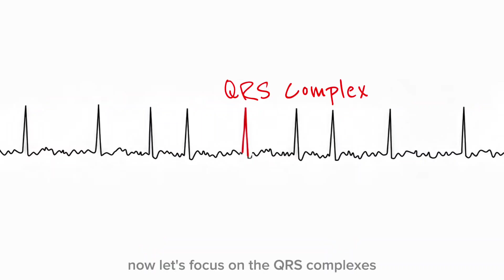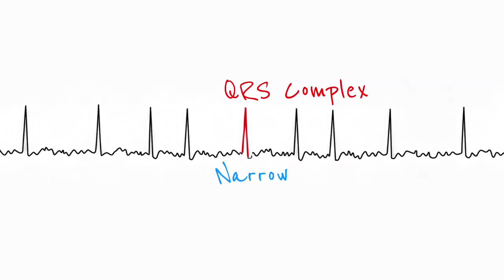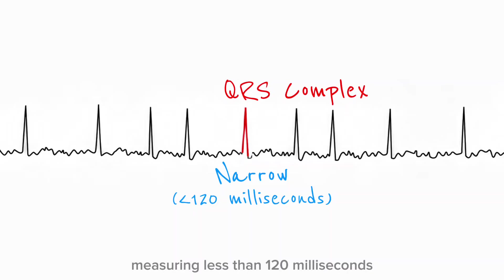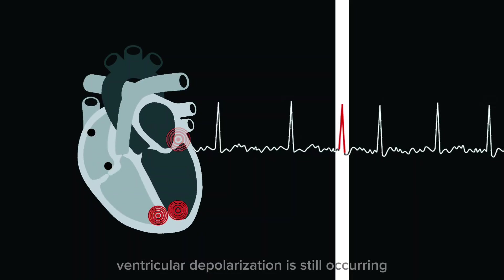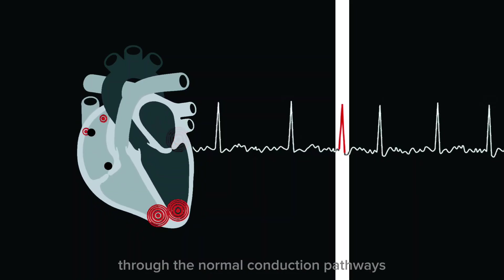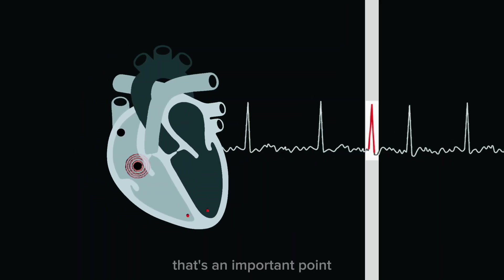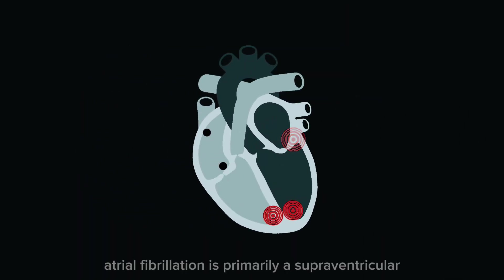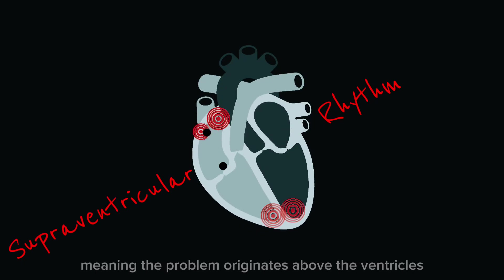Now let's focus on the QRS complexes. In most cases of atrial fibrillation, the QRS complexes are narrow, measuring less than 120 milliseconds. This tells us that despite the chaos in the atria, ventricular depolarization is still occurring through the normal conduction pathways. Atrial fibrillation is primarily a supraventricular rhythm, meaning the problem originates above the ventricles.